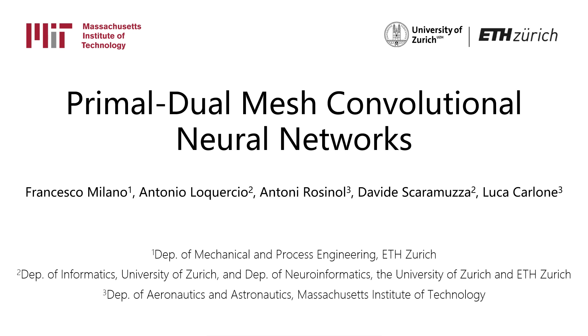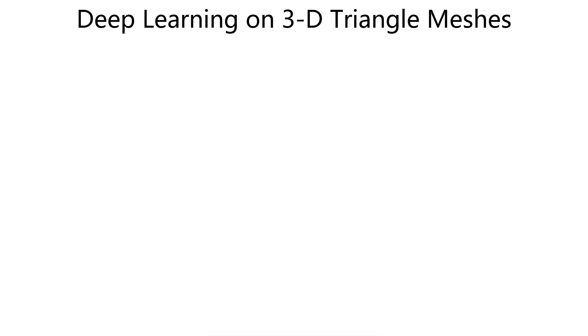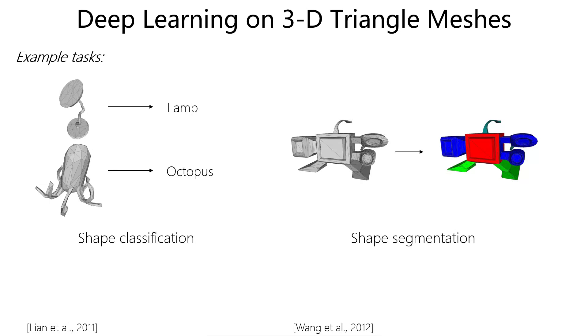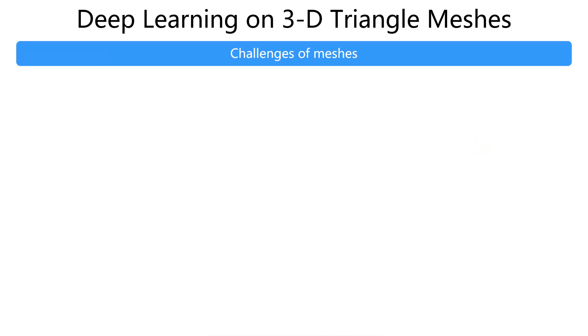We present Primal Dual Mesh Convolutional Neural Networks. The focus of our paper is on performing deep learning tasks, specifically shape classification and segmentation on 3D triangle meshes.